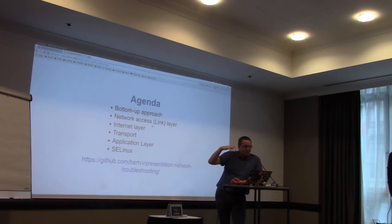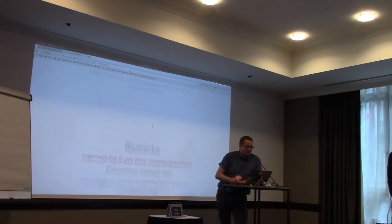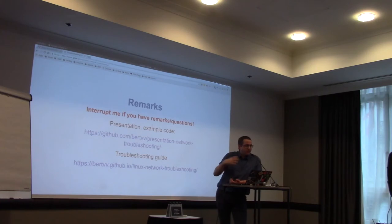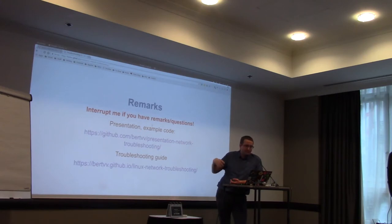What I want to propose is to always follow a bottom-up approach to network troubleshooting. You look at the TCP/IP protocol stack and start at the bottom layer and work your way up. I'm going to show the most important commands to be used on CentOS. The presentation and example code is on the Git repository for this presentation. A more elaborate version is in another repository — my Linux networking troubleshooting guide.